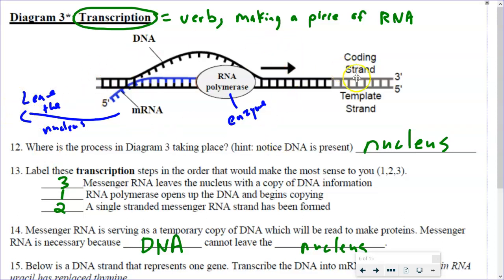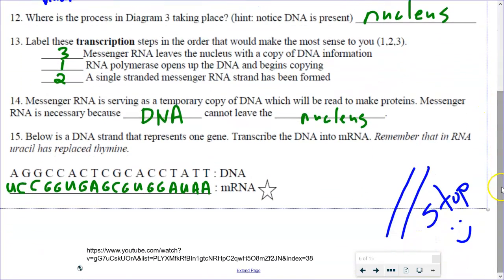All of this has to happen in the nucleus because the DNA cannot leave. Our order of steps here is 3-1-2. So first, the RNA polymerase opens the DNA. Then we build that single strand. And lastly, that single strand will leave the nucleus. The DNA cannot leave the nucleus — that's why we have to have the message to take the information out.